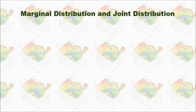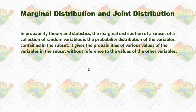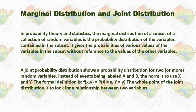Now, let's clarify what marginal distribution and joint distribution are. Marginal distribution is when you have multiple variables and you only consider one variable without considering the others — you calculate the probability of that variable without referring to the values of the other variables. The joint probability distribution considers the probability when two or more variables happen at the same time, looking for the relationship between two or more variables.